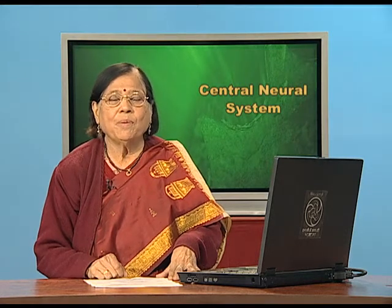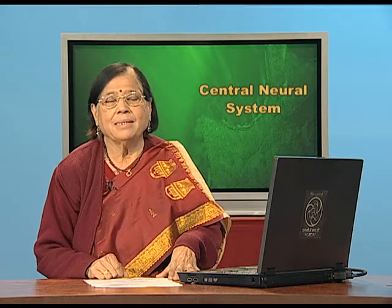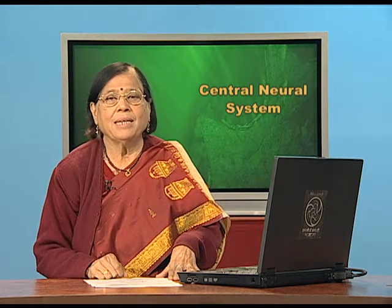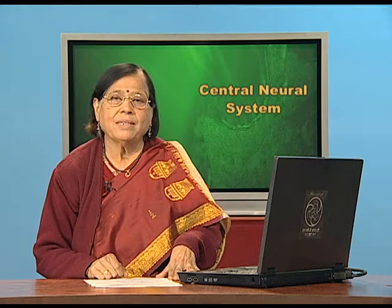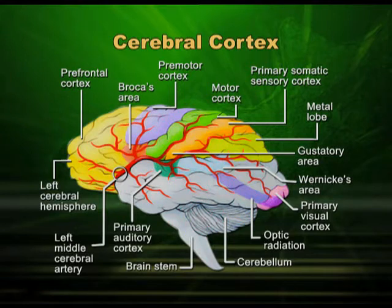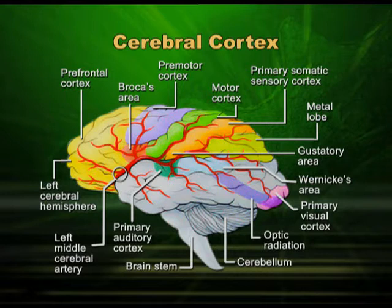We have to use the brain for so many things, so its surface area should be large, but it cannot be bigger than our head. So, the area must fit within our head, and to increase it further, it has to be folded — that is why the cerebral cortex is highly folded. The cerebral cortex is so folded, increasing the surface area, and all of it represents the nerve cells of the cerebral hemispheres.